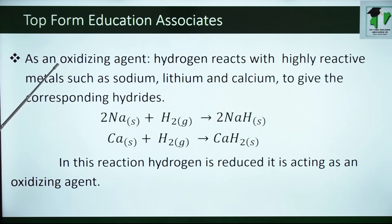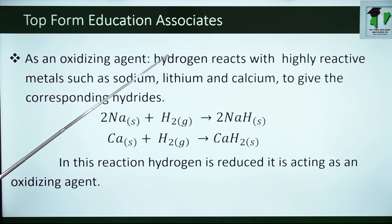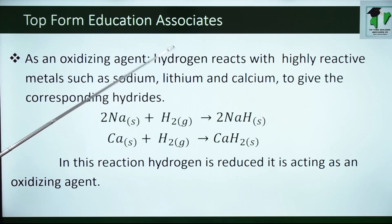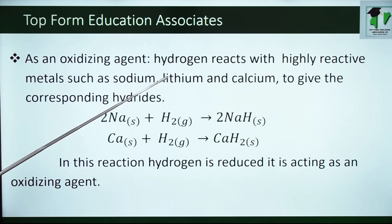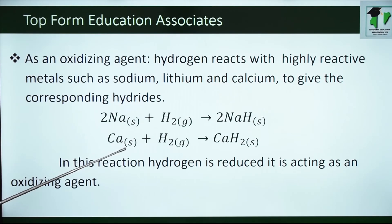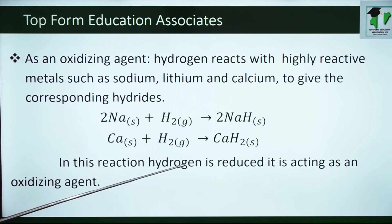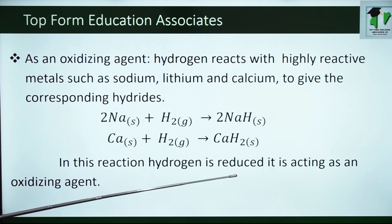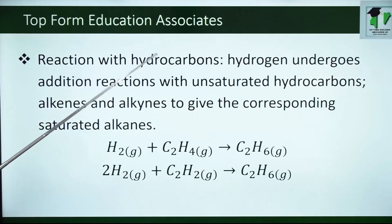Hydrogen can also act as an oxidizing agent. Remember we said that it is also a reducing agent. This is because hydrogen is said to belong to Group 1 — it can act as a metal and it can also act as a non-metal. Hydrogen reacts with highly reactive metals such as sodium, lithium and calcium to give the corresponding hydride. You can see it reacting with sodium to produce sodium hydride and with calcium to produce calcium hydride. In this reaction, hydrogen is reduced, so it is acting as an oxidizing agent.